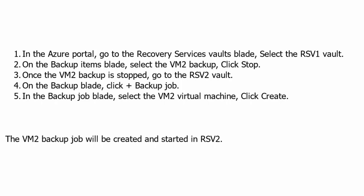The first step in this process would be to go to the Azure portal and navigate to the recovery service vault blade. We will select the RSV1 vault, and on the backup item blade of RSV1 we will select the VM2 backup and click to stop the backup. So first of all we are stopping the backup job which is conducted on RSV1.